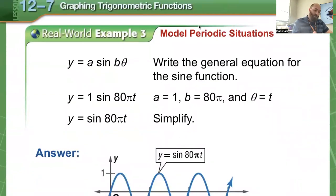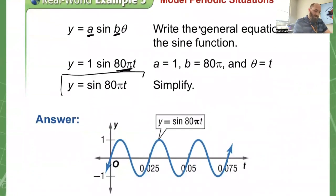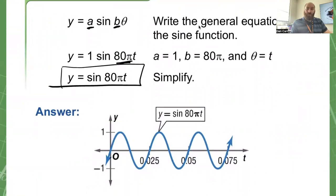We're going to leave it as an amplitude of 1. We don't have any information to change that, but the b value is replaced with 80 pi. So we have y equals sine of 80 pi times t. That is modeling the sound wave.